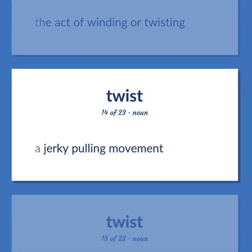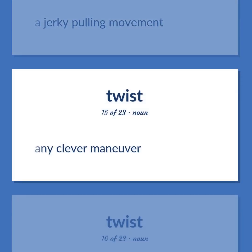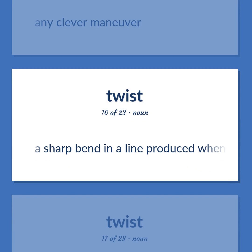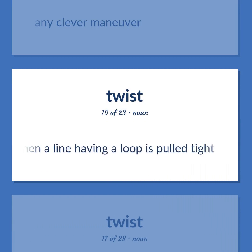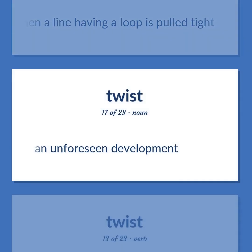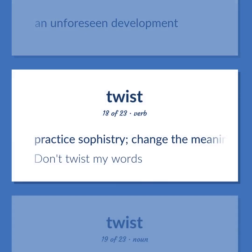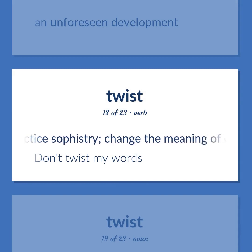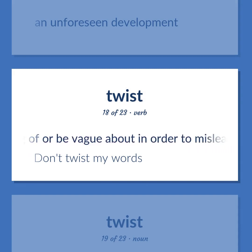Twist: a jerky pulling movement. Also, any clever maneuver. Also, a sharp bend in a line produced when a line having a loop is pulled tight. Also, an unforeseen development. Also, to practice sophistry, change the meaning of, or be vague about in order to mislead or deceive — 'Don't twist my words.'